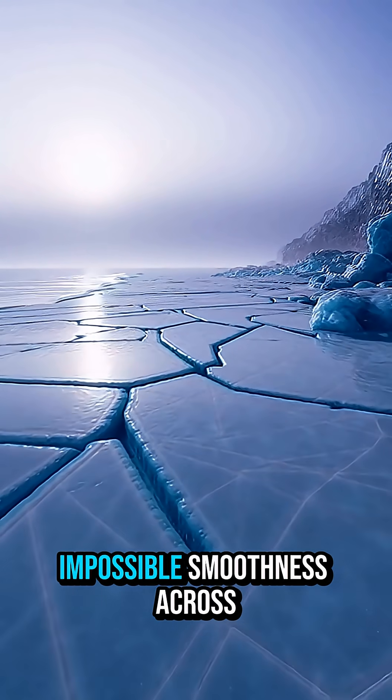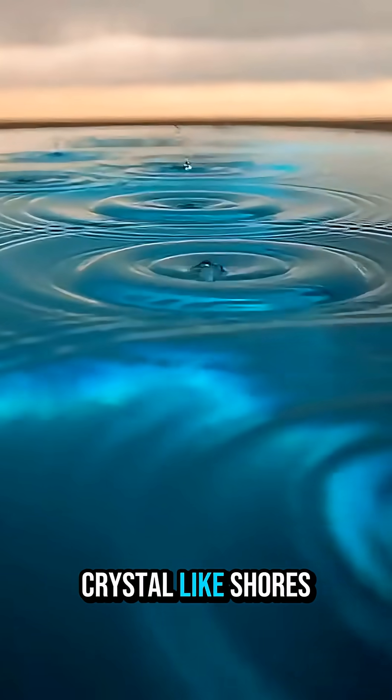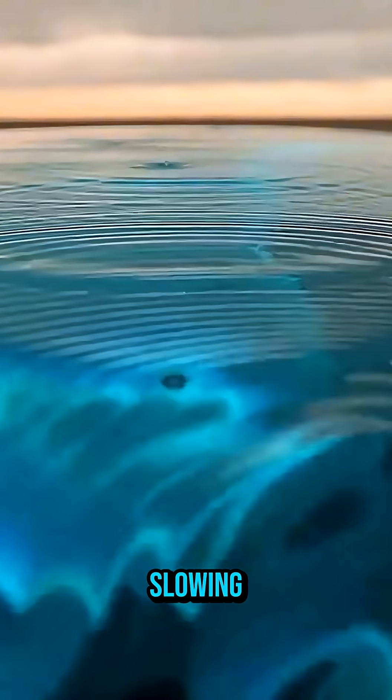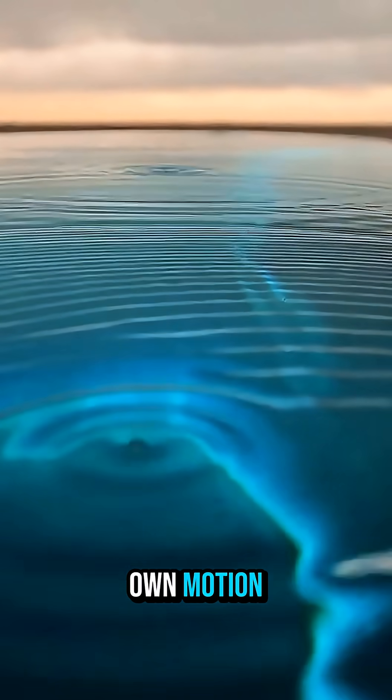waves moving with impossible smoothness across crystal-like shores. Ripples pass through each other without slowing, as if the ocean ignores its own motion.